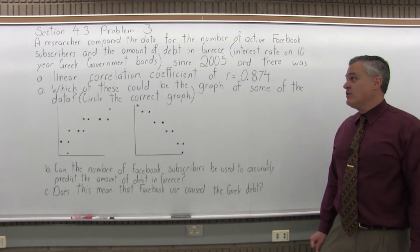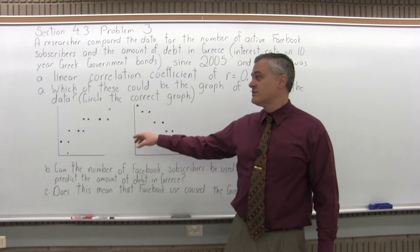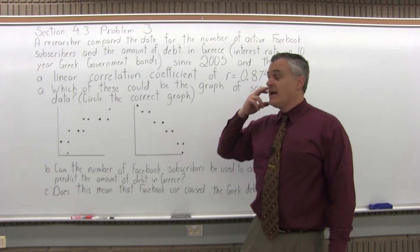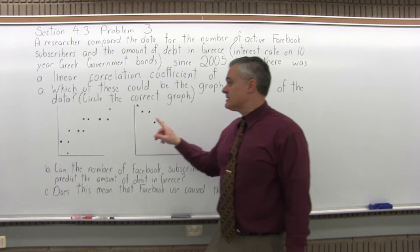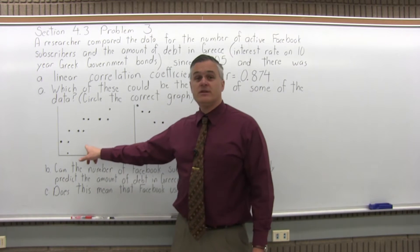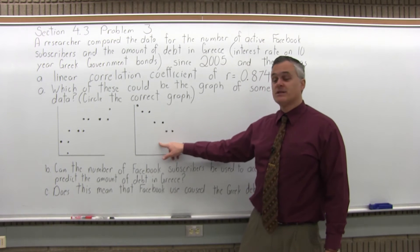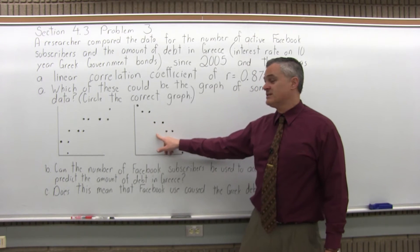So part A, which of these could be the graph of some of the data? Circle the correct graph. So we have two choices, and the difference is as we go from left to right on the first one, the data points tend to go up. As we go from left to right on the second one, the data points tend to go down.